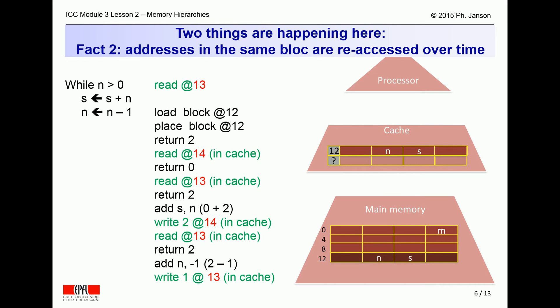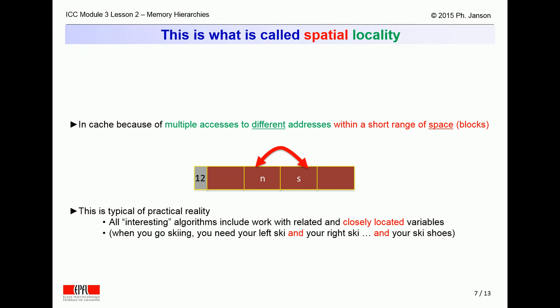The second of the manifestations of locality of reference is that the program accesses several variables that are closely located in space, because all the variables that it needs were positioned together in memory by the compiler or assembler that produced the executable program. This is what is called spatial locality.